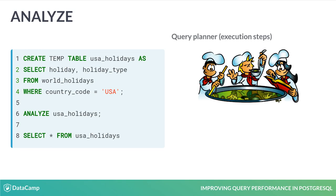Recall that a SQL query is like the order you provide a waiter. The waiter takes the SQL instructions to the cooks, or query planner, who creates an execution plan — transforming the SQL order into a meal. ANALYZE calculates the records returned at different query points and stores this information in the PG statistics catalog. The query planner uses PG statistics to estimate the runtime of possible execution plans, and the table statistics improve the planner's ability to choose the optimal execution plan.